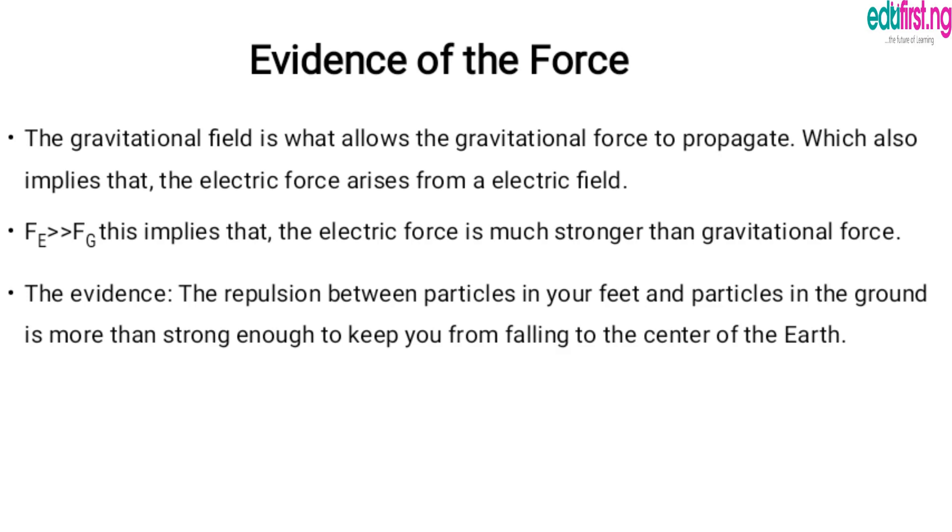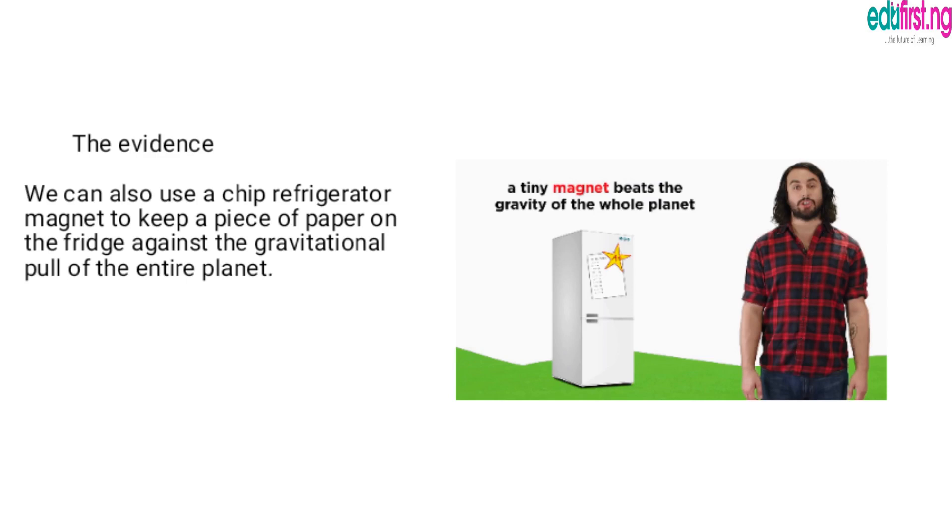The electric force is much stronger than the gravitational force. What are the evidence of this? We realize that the electric force keeps you from falling to the center of the Earth. Also, a tiny magnet beats the gravity of the whole planet. This means that the repulsion between particles in your feet and particles in the ground is more than strong enough to keep you from falling to the center of the Earth. Also, a cheap refrigerator magnet can keep a piece of paper on the fridge against the gravitational pull of the entire planet.